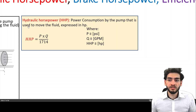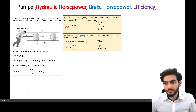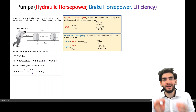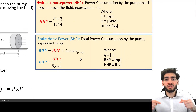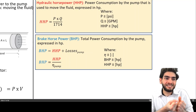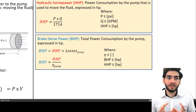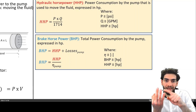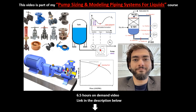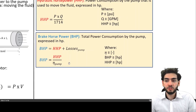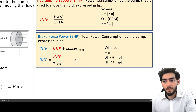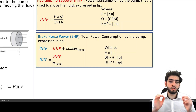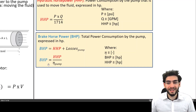The second parameter is brake horsepower, which is the total power consumption by the pump. It includes the hydraulic horsepower — the useful energy absorbed by the fluid — plus the pump losses from the previous slide: mechanical losses, volumetric losses, and hydraulic losses. Brake horsepower can be calculated in two ways: by adding hydraulic horsepower to the pump losses, or, if the pump supplier provides a pump efficiency, using that efficiency equation.